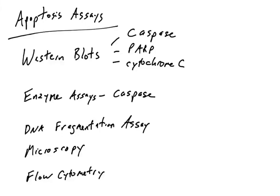Hi there. This is the first in a series of videos on apoptosis assays. If scientists are working with cells, let's say cancer cells, and they're trying to find a way to kill cancer cells or interfere with their growth and division, one thing scientists would like to know is: is apoptosis occurring? There has to be a way to measure whether or not apoptosis is occurring in cells. We're going to review how Western blots can be used to detect whether or not apoptosis is occurring.